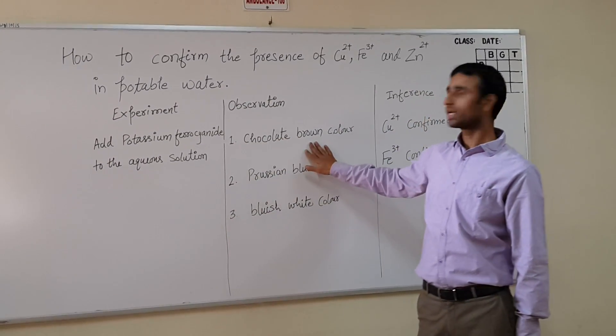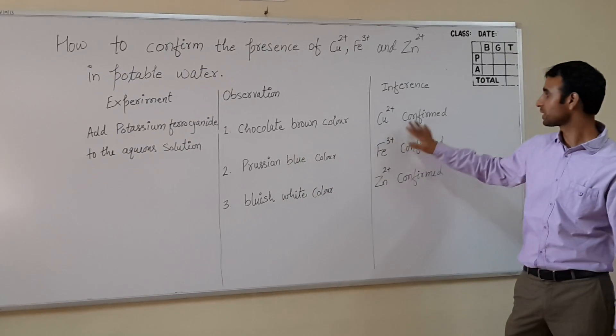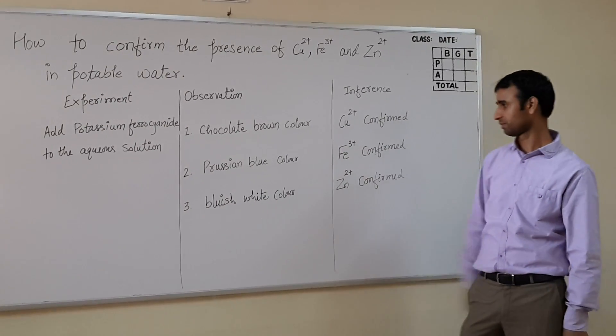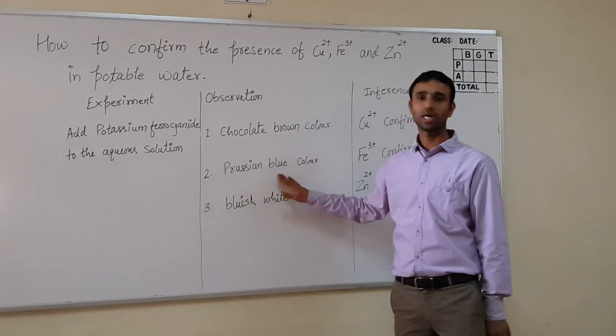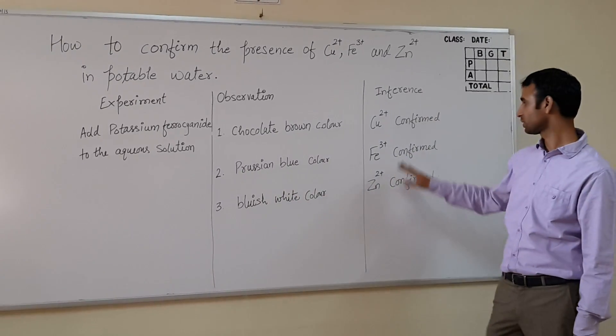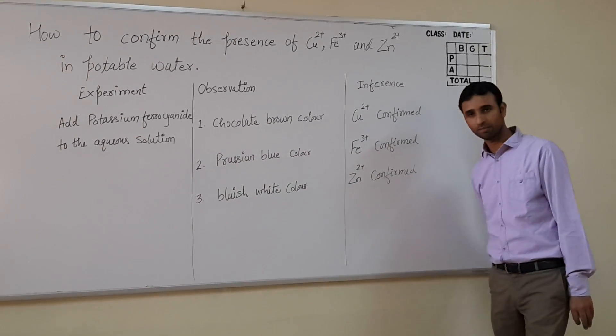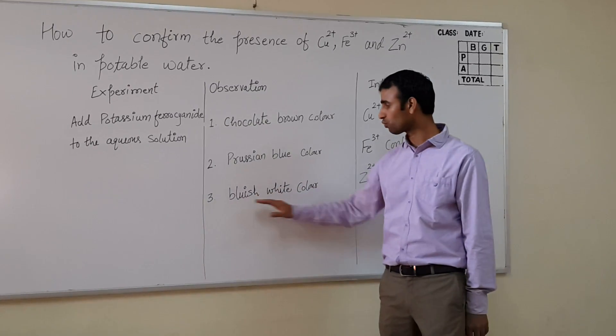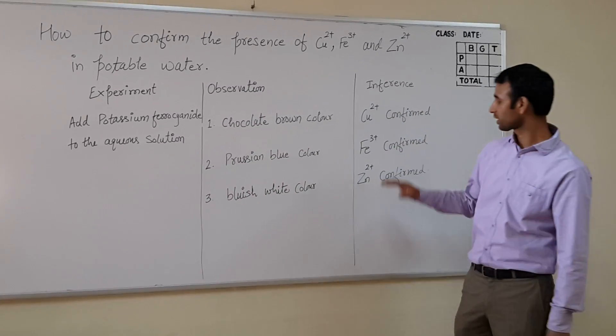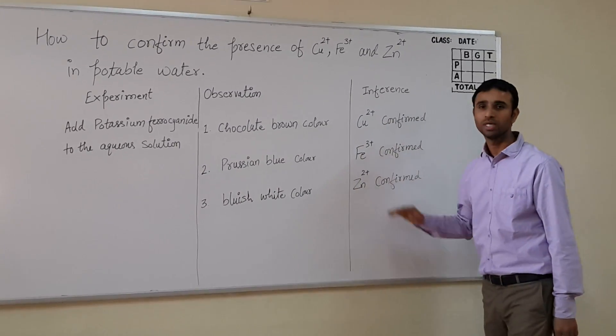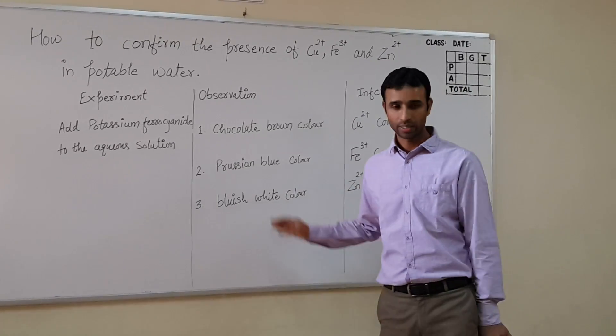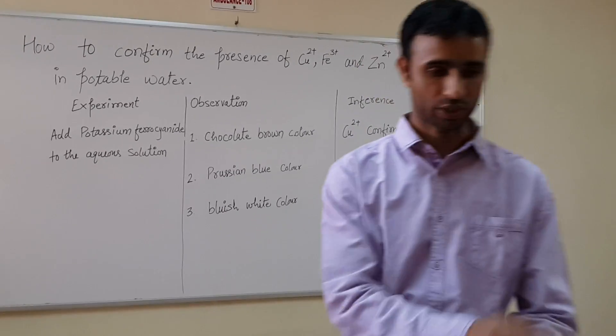If chocolate brown color appears, that confirms the presence of Cu2+. If Prussian blue color appears, that confirms the presence of Fe3+. And if bluish white color appears, that confirms the presence of Zn2+. Now let us take the experiment.